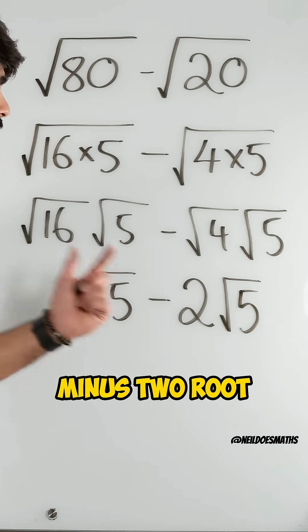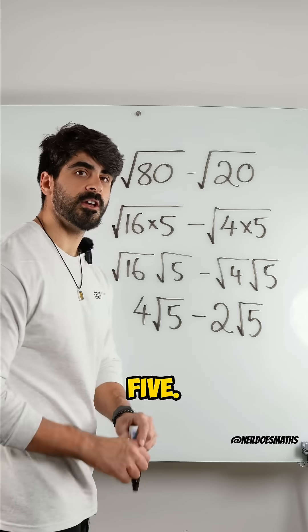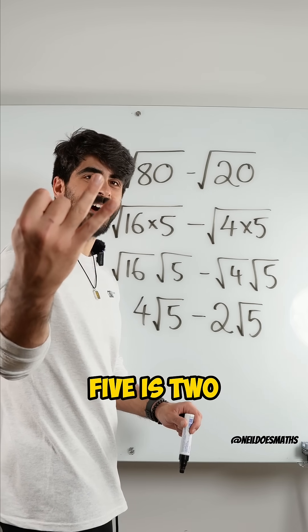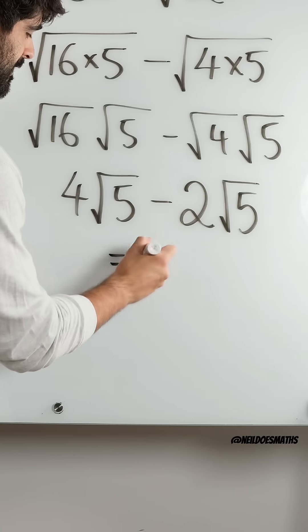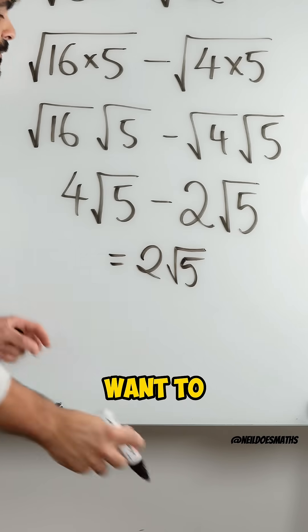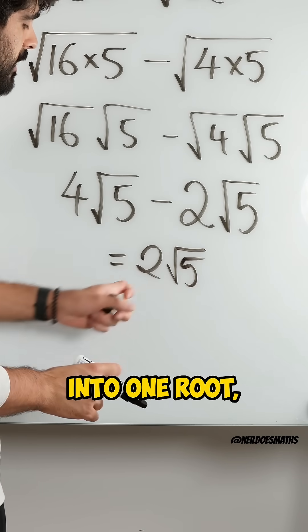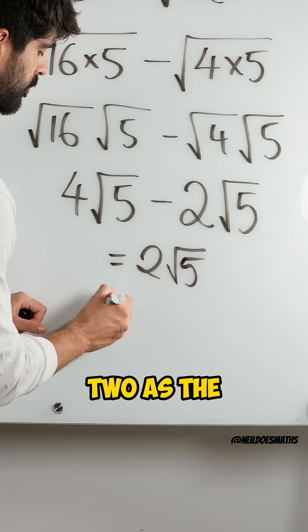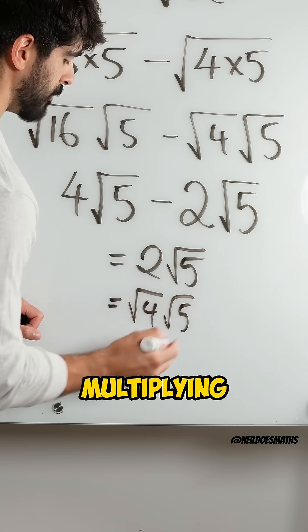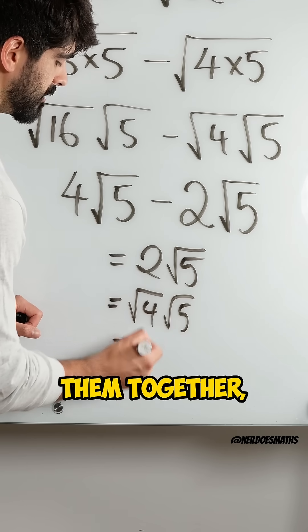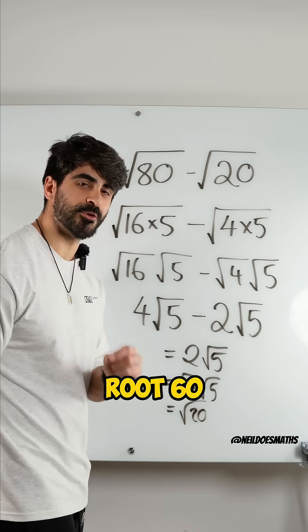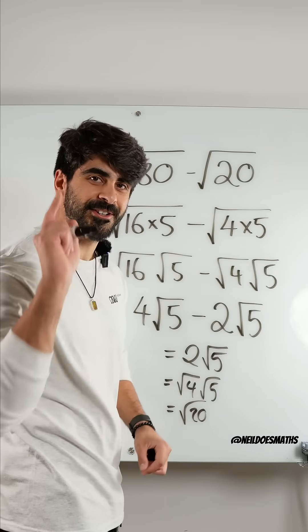4 root 5 minus 2 root 5 is 2 root 5. And if I wanted to re-represent this back into one root, I can rewrite 2 as the root of 4, times root of 5, and multiplying them together, you actually get root of 20, not root 60. Nice.